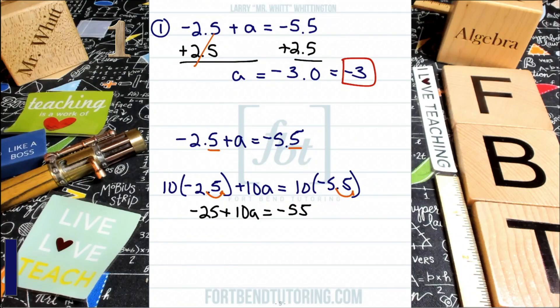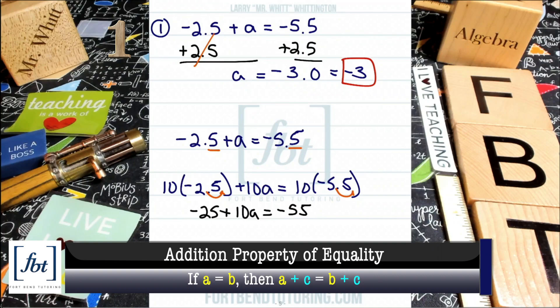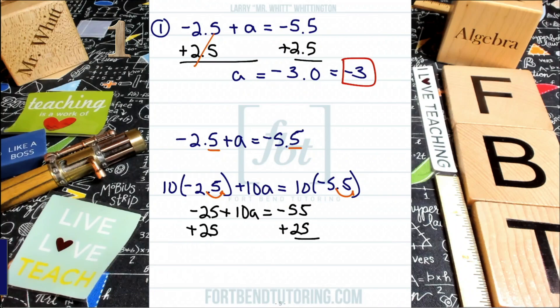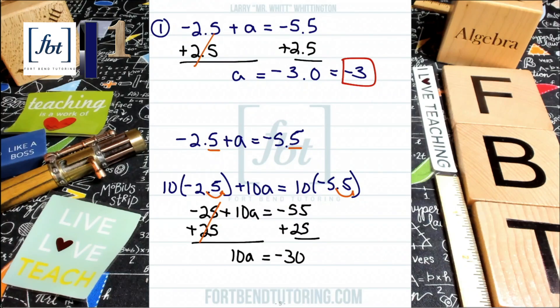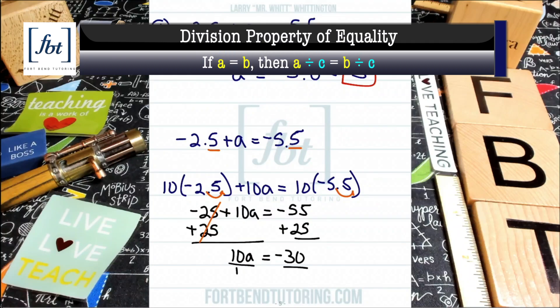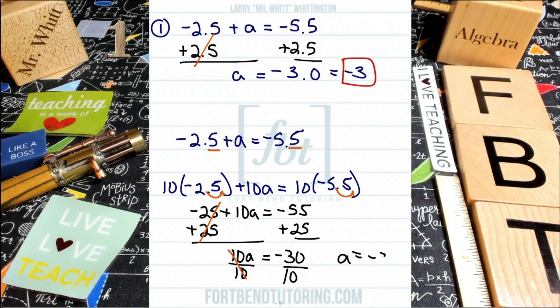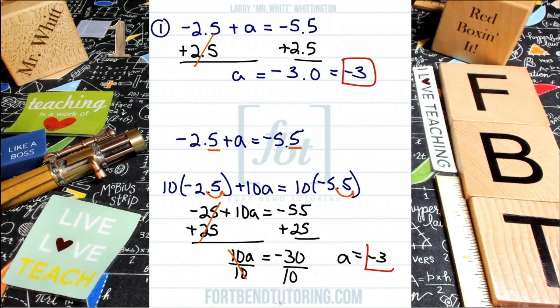So I'm going to isolate the term with the variable by using the addition property of equality. And I'll be adding 25 to both sides of the equation. Just like so guys, simplifying the 25s cancel out. We're bringing down 10A, which equals to negative 30. And now you'll be dividing both sides by 10. Like so simplifying. We find that A equals negative three red box it. Alright. So you have your options there. Let's call it option A and option B and let's move on.